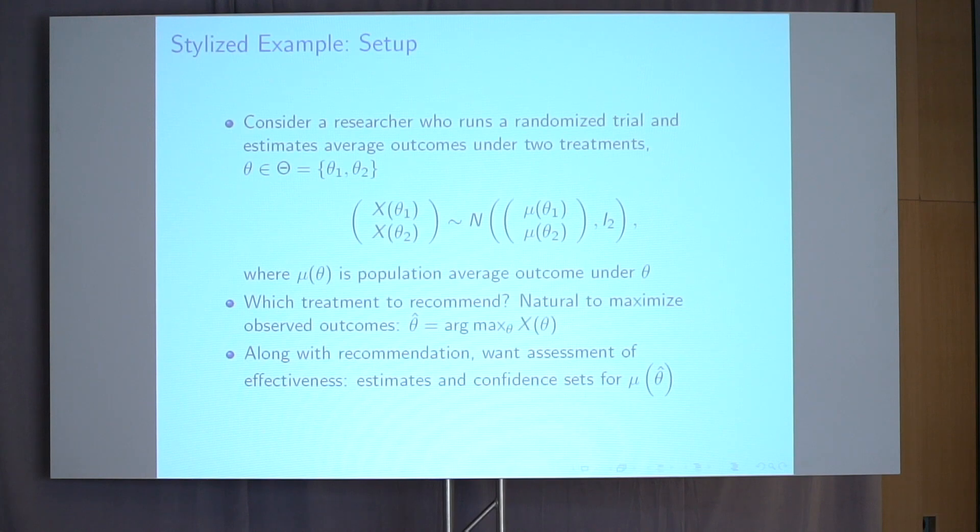Given results from such an experiment, I face a question of what to recommend. One natural approach is to recommend treatment theta-hat, the argmax of x_theta — the treatment that led to the highest outcome in the experiment, the thing that looked best based on initial data. Along with such a recommendation, we might also want an assessment of the effectiveness of this recommended treatment — estimates and confidence sets for mu_theta-hat, the true average outcome under this estimated best treatment.